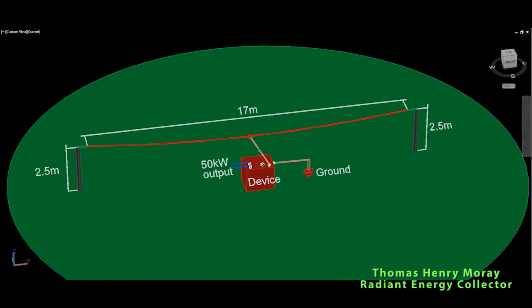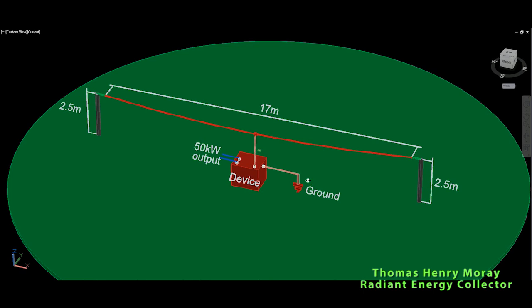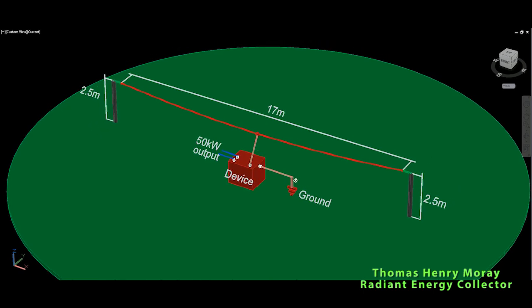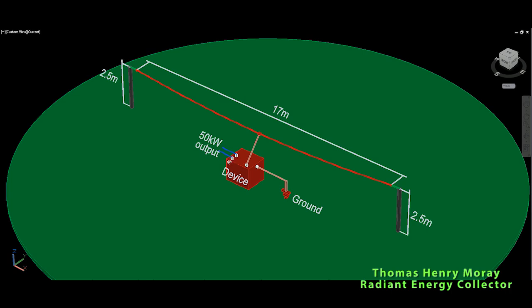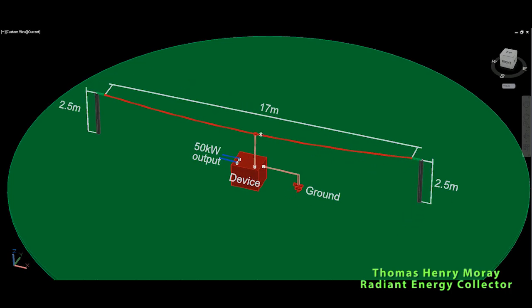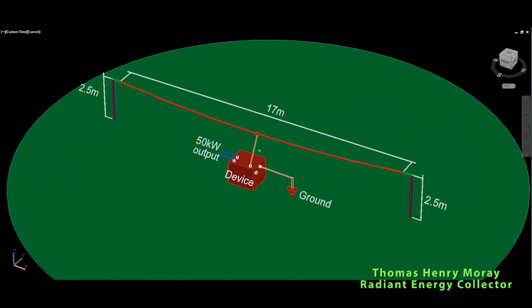Hello viewers, welcome back. Today we continue with radiant energy and this patent is called Thomas Henry Moray radiant energy collector. Basically, it collects the cosmic energy or cosmic waves and extracts it through this device. It is just connected to a ground and we are able to get 50 kilowatt output.